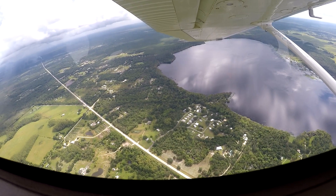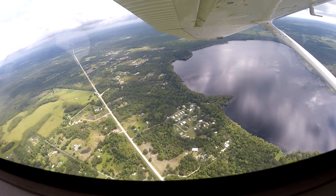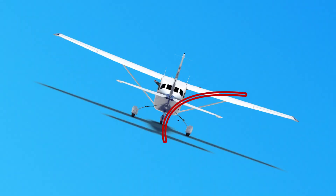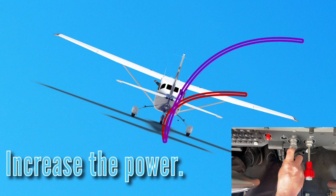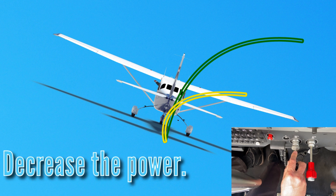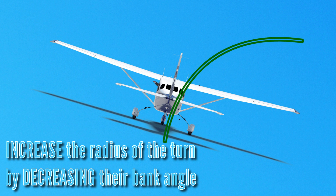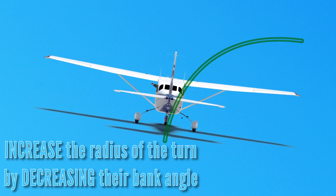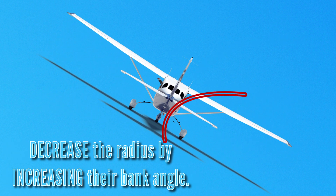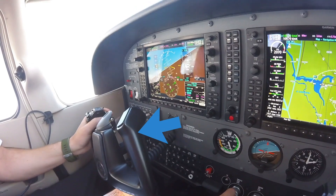Pilots also control the radius of their turn by adjusting bank and power settings. If a pilot maintains the same bank angle but wants to widen the turn radius, they increase power; to decrease the radius, they reduce power. With the same power setting, the pilot can increase the radius by decreasing bank angle, and decrease the radius by increasing bank angle. The pilot will also need to adjust elevator pressure accordingly to remain in a level turn.